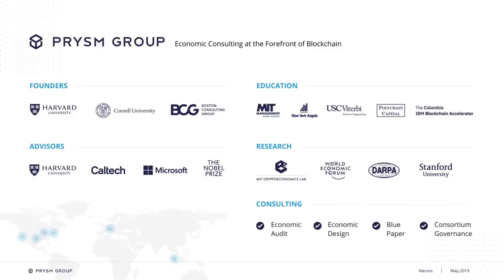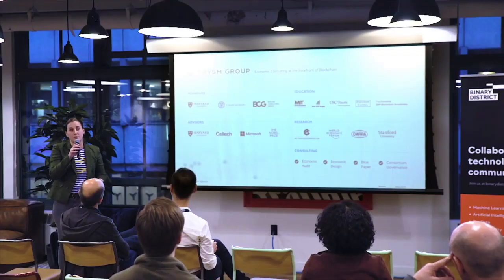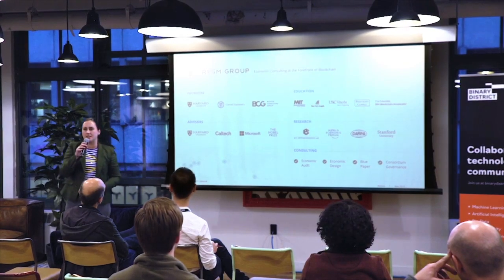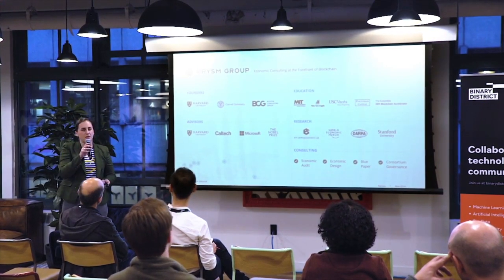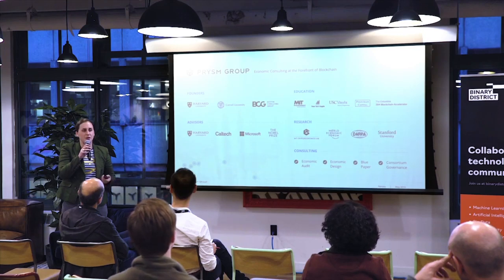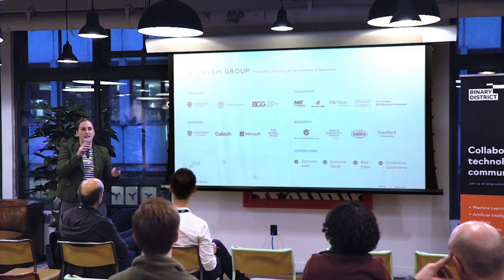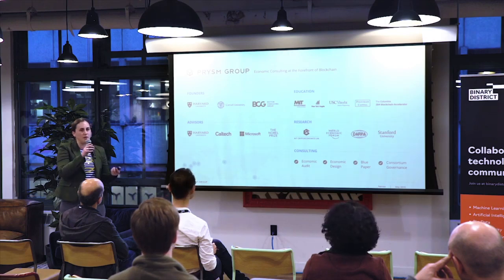So who am I and why am I standing here? I'm a founding economist of Prism Group. We are a firm that does economics and governance design for blockchain platforms and distributed ledger projects. We came together about 18 months ago. I did a PhD in economics at Harvard, and one of my co-founders and I, as we started learning more about blockchain, realized that there's actually a lot of really interesting economics in here — even more so than the price dynamics of a crypto token.